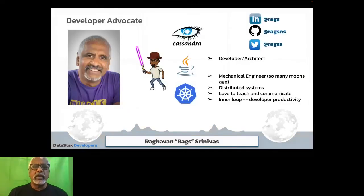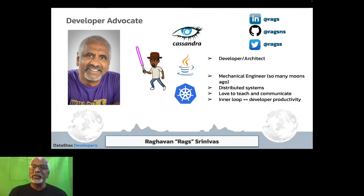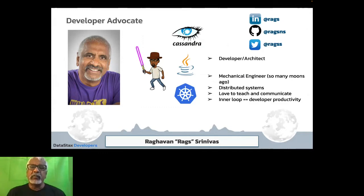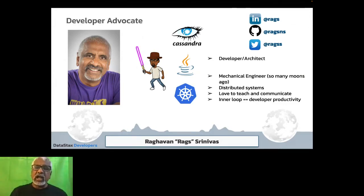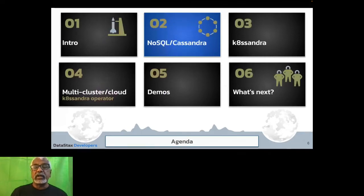My name is Raghavan Srinivas, but I go by Rags — Rags Not to Riches, easiest way to remember me. I'm a developer at heart but was also a mechanical engineer from VTU Bangalore a long time ago. I specialize in distributed systems but love to teach and communicate — I even teach in the Boston area where I've lived pretty much half my life. One of my passions is the inner loop. Next week there's a talk in Berlin for OpenInfra where I'm discussing Quarkus, deploying it on Kubernetes, and gaining productivity in the inner loop.